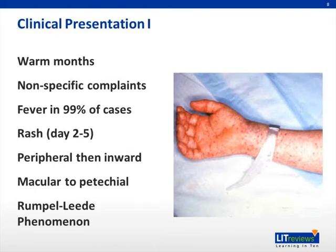A patient infected with Rocky Mountain Spotted Fever will often present with vague and nonspecific complaints such as fever, headache, myalgias, and GI symptoms. The fever, however, is found in 99% of cases and is often over 102 degrees Fahrenheit. This fever usually occurs in the first two to three days of the illness and may precede other symptoms by as much as one week.